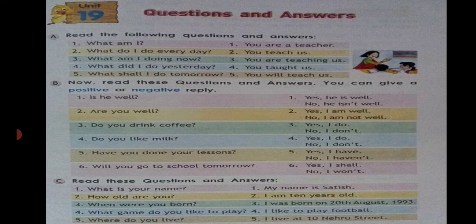Read the below given questions and answers: 'What is your name?' — 'My name is Satish.' 'How old are you?' — 'I am 10 years old.' 'When were you born?' — 'I was born on 20th August 1993.' 'What game do you like to play?' — 'I like to play football.' 'Where do you live?' — 'I live at 10th Nehru Street.'